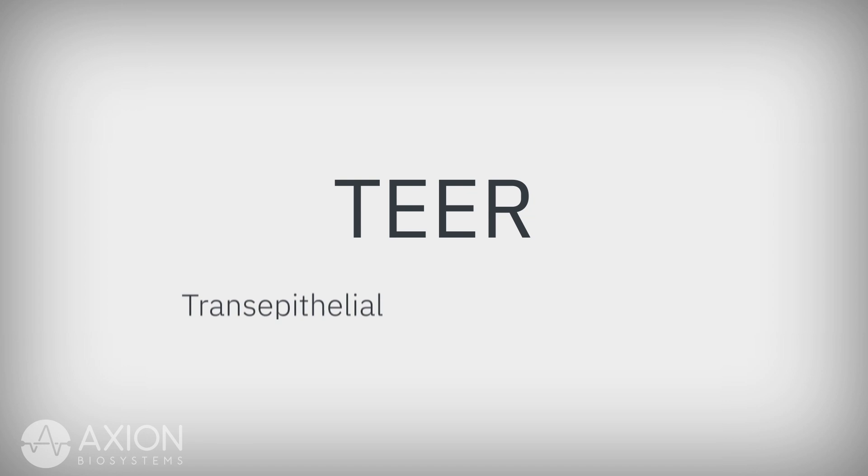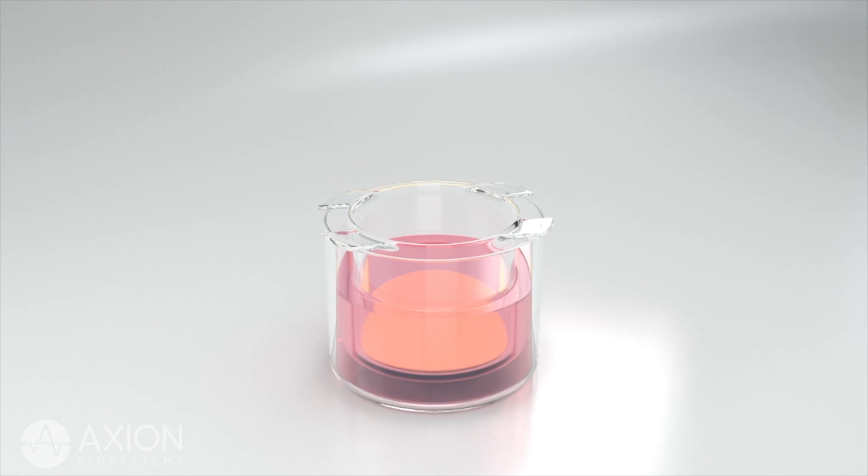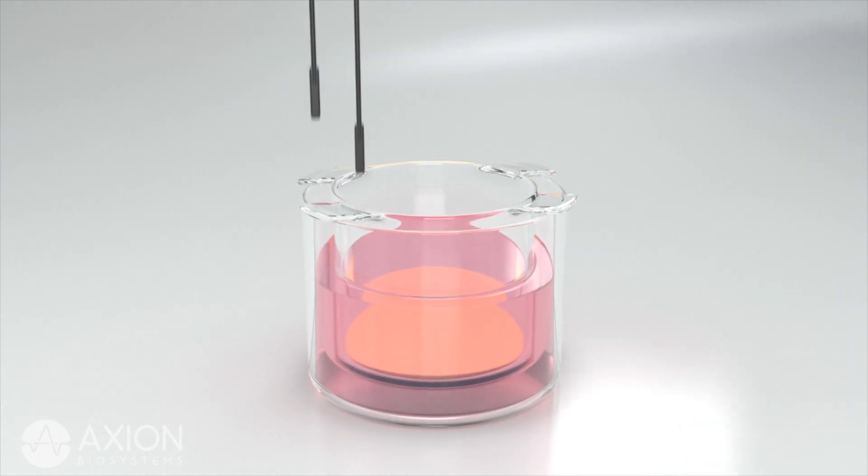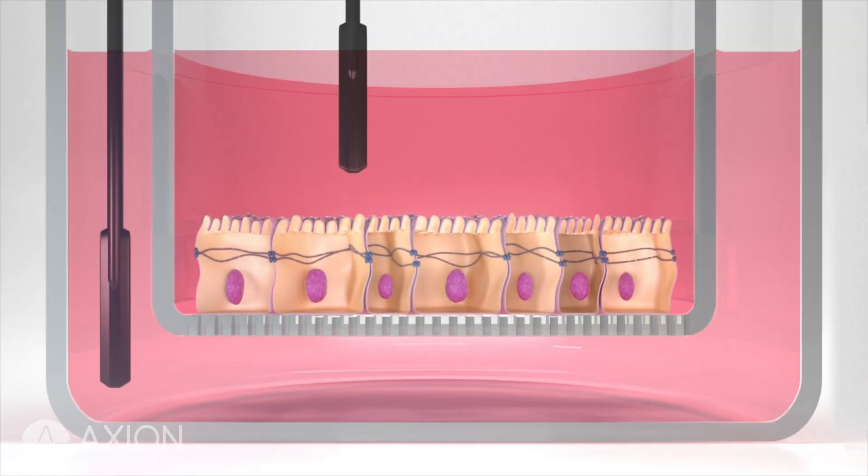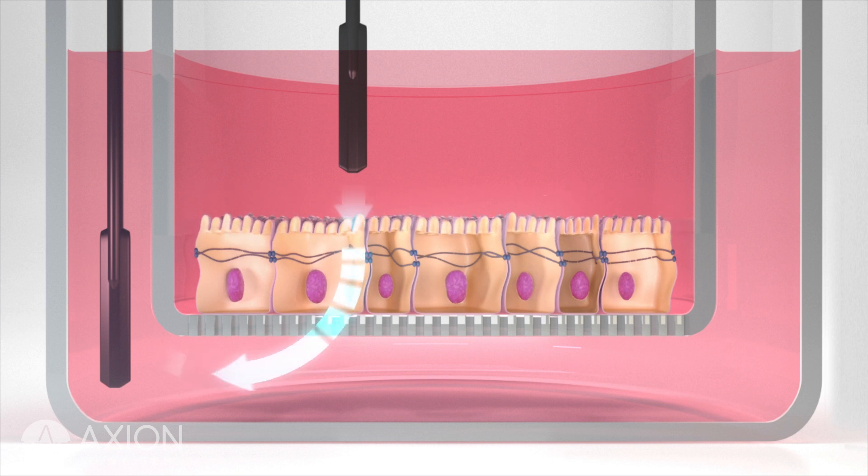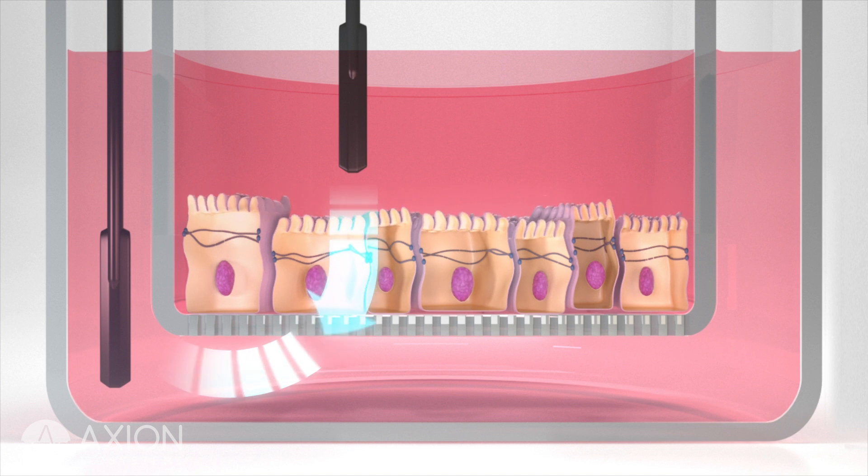TIR stands for transepithelial electrical resistance. Traditionally, TIR is measured by manually placing two chopstick-style electrodes on each side of a confluent cell layer. A low-frequency current is applied and the resistance of the barrier is measured. The easier the current flows between the cells, the lower the TIR value.